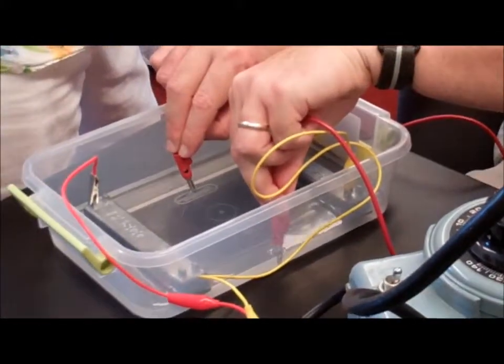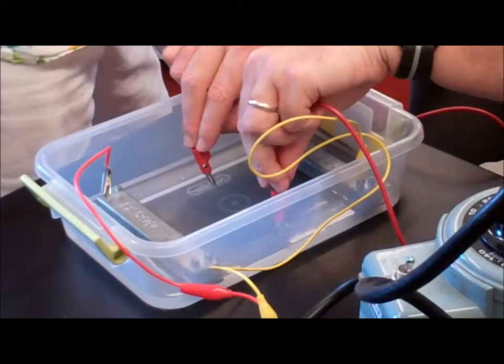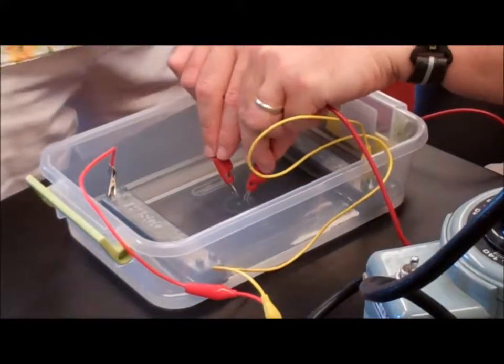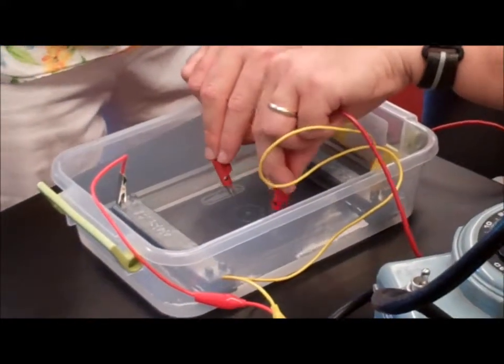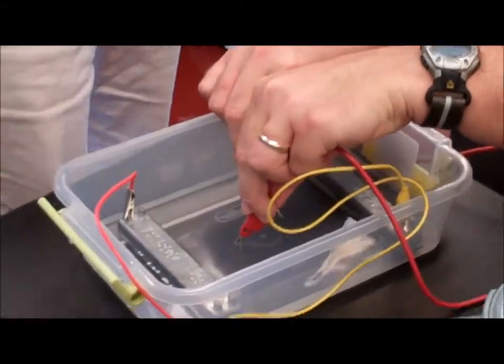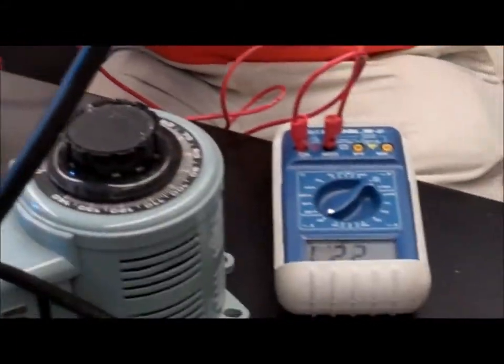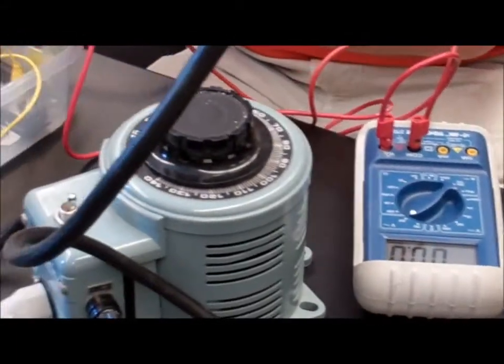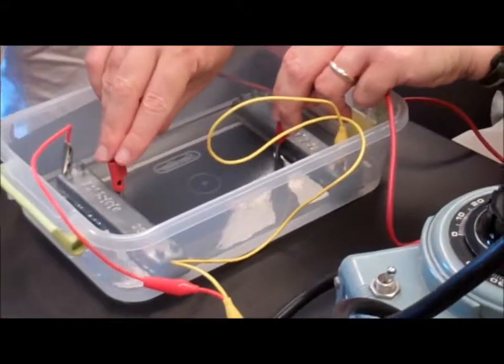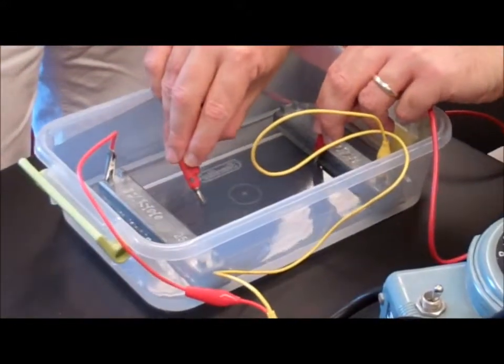But if I go this way, I don't get a voltage difference because the electric field is uniform between the plates and lines of equal potential this way. This way, I get voltage difference. You want a good lab? Let's plot voltage as a function of distance.